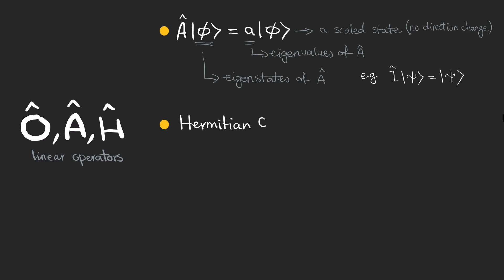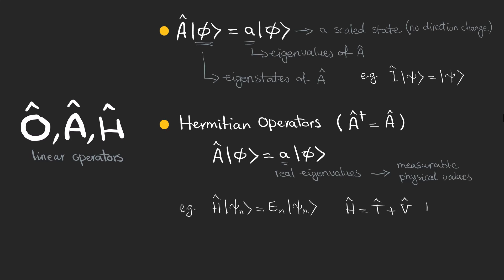There are some very important operators in quantum mechanics called Hermitian operators that have real eigenvalues. These eigenvalues correspond to measurable physical values. For example, the Hamiltonian, which represents the energy of the system, is a Hermitian operator and has real eigenvalues that correspond to the possible energies that the quantum system can have and we call them energy eigenstates.